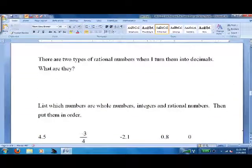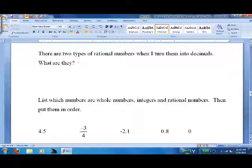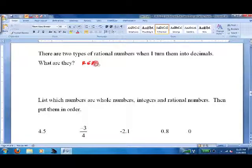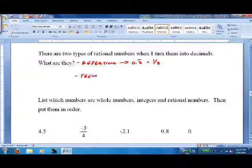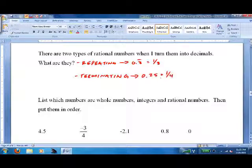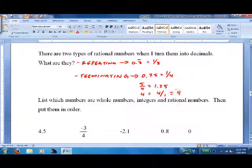Now, there are two types of rational numbers, which I just showed. They are repeating, and that was 0.3 repeating, which equals 1 third. And they are terminating, like 0.25, which is 1 fourth. Or 5 fourths, which is 1.25. Or the number 4, which you could write as 4 over 1, but we just write as 4. Those are all terminating.